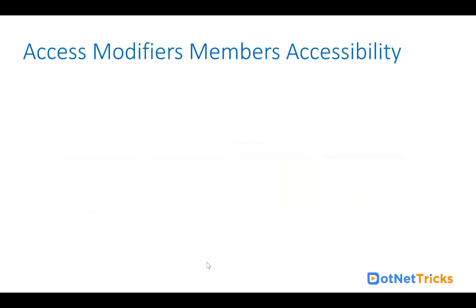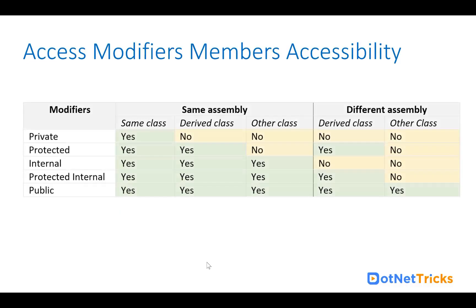Now let's understand where these access modifiers are accessible. To understand accessibility, let's say we have two different assemblies. As you can see in the diagram, all access modifiers can be accessed within the same class. Whatever class we use for declaring members, we can access them within that same class. In the derived class, however, we cannot access private members.